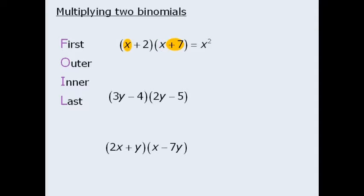Next we multiply the two outer terms. As you can see there are four terms altogether on the left hand side here, and these two highlighted terms are the outer terms. So here x times positive 7 equals positive 7x.